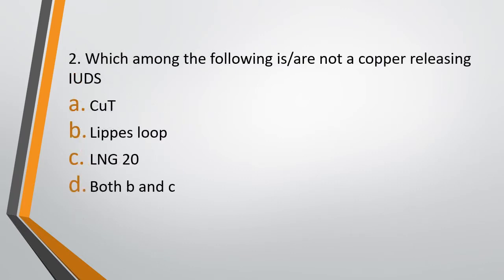Question 2. Which among the following is or are not a copper releasing IUD? Option A: Copper T. Option B: Lipis Loop. Option C: LNG20. Option D: Both B and C. The correct answer is Option D — both Lipis Loop and LNG20 are not copper releasing IUDs.